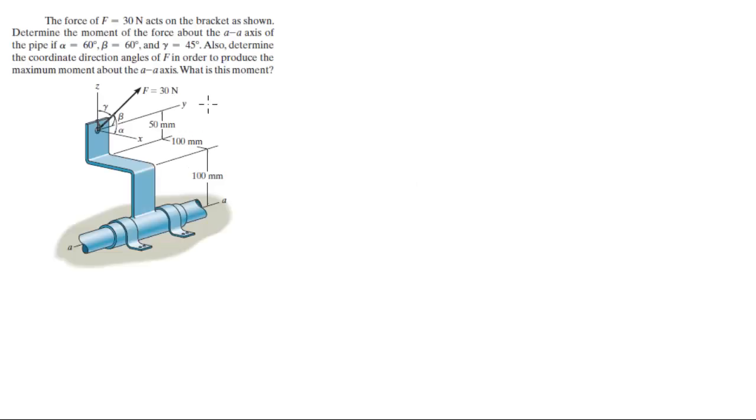In this problem, a force with a magnitude of 30 newtons acts on the bracket shown. Find the moment of the force about the A axis on the pipe.